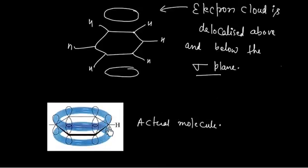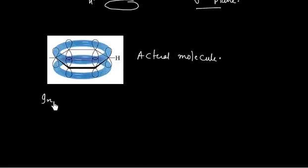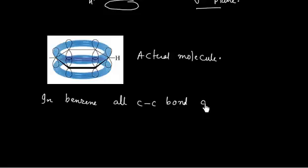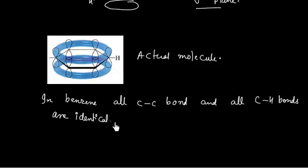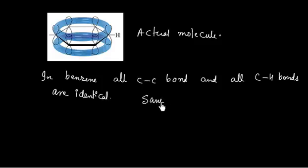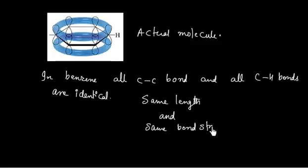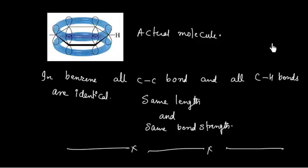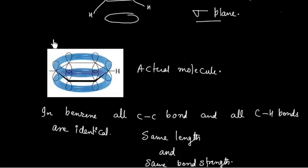Since the electron cloud is delocalized, all carbon-hydrogen bonds are equivalent and all carbon-carbon bonds are similar. In benzene, all carbon-carbon bonds and all carbon-hydrogen bonds are identical — they have the same length and the same bond strength. This orbital picture diagram describes the structure of benzene.